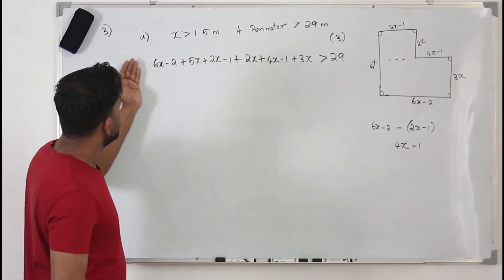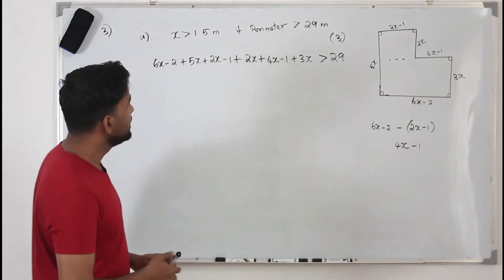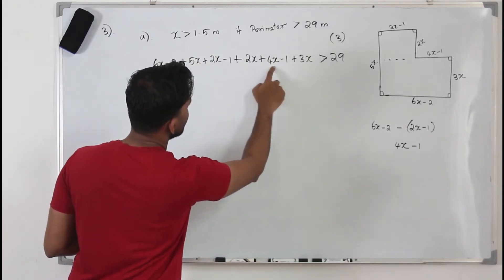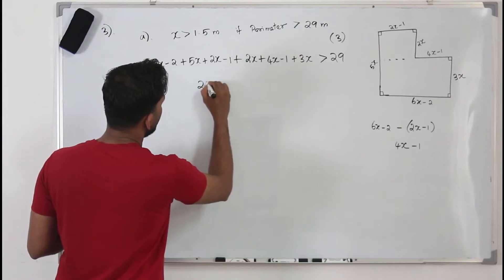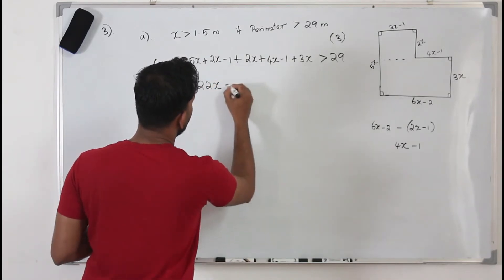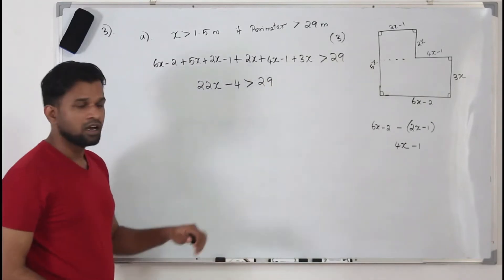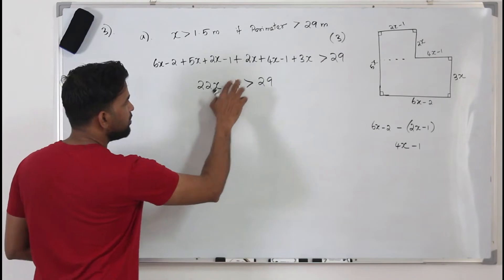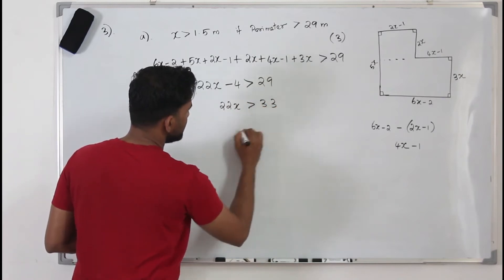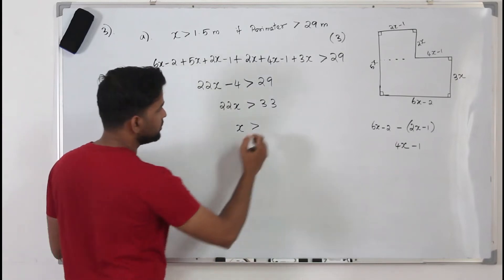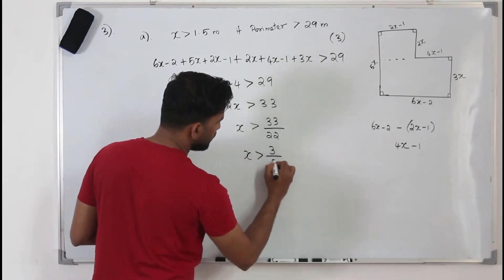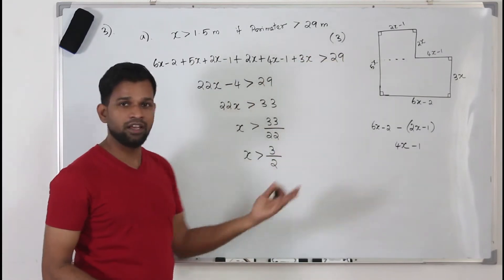We just need to simplify the like and unlike terms. Adding the x terms: 6x, 11x, 13x, 15x, 19x, 22x — so we get 22x. Then the constants: minus 2 minus 1 minus 1 equals minus 4. So 22x minus 4 is greater than 29. Bringing minus 4 to the right: 22x is greater than 33. Dividing by 22 gives x greater than 33/22, which is 3/2 = 1.5. We've proven x is greater than 1.5 meters, scoring 3 marks.